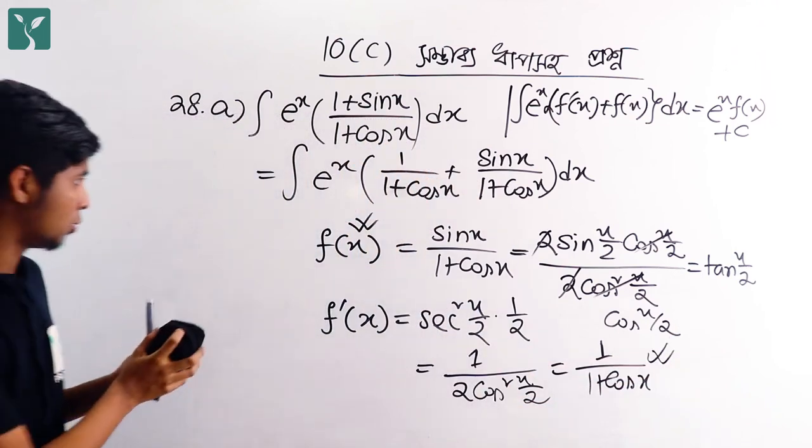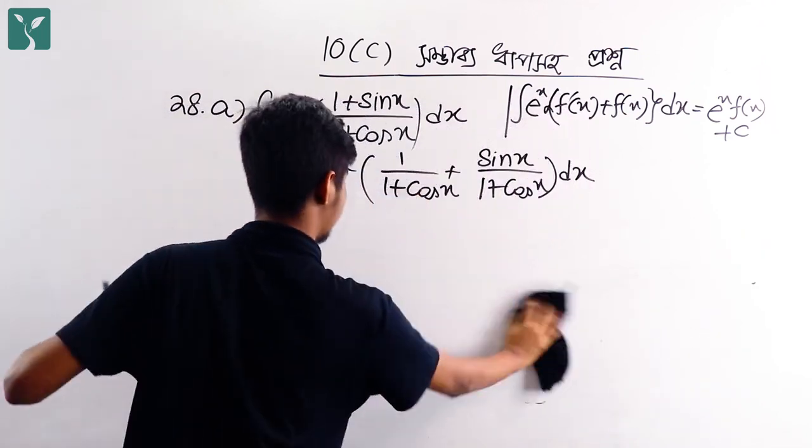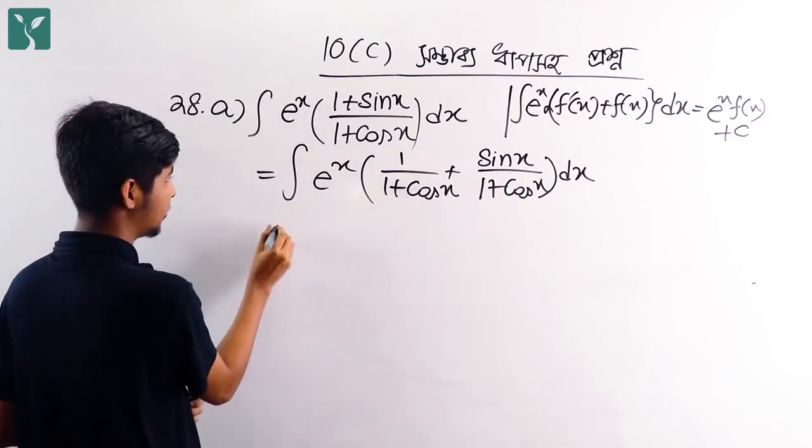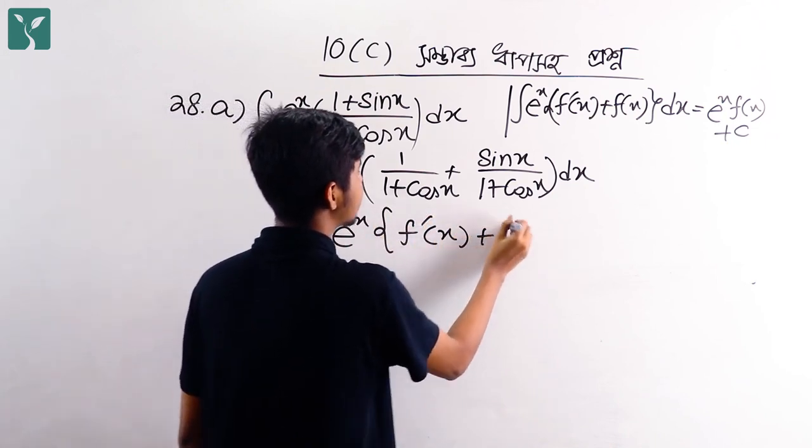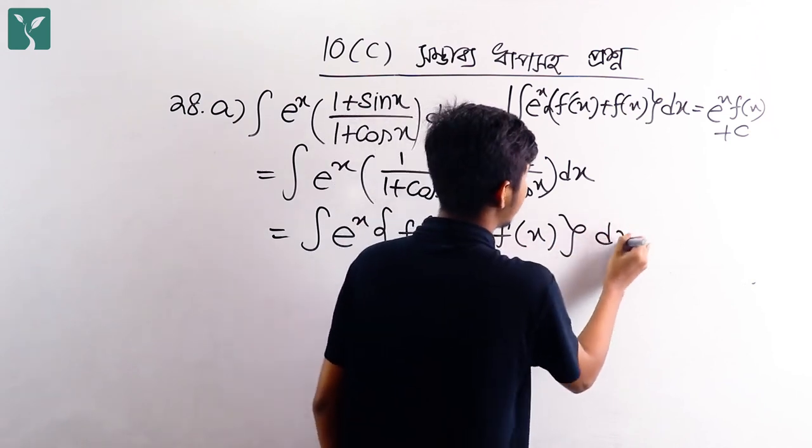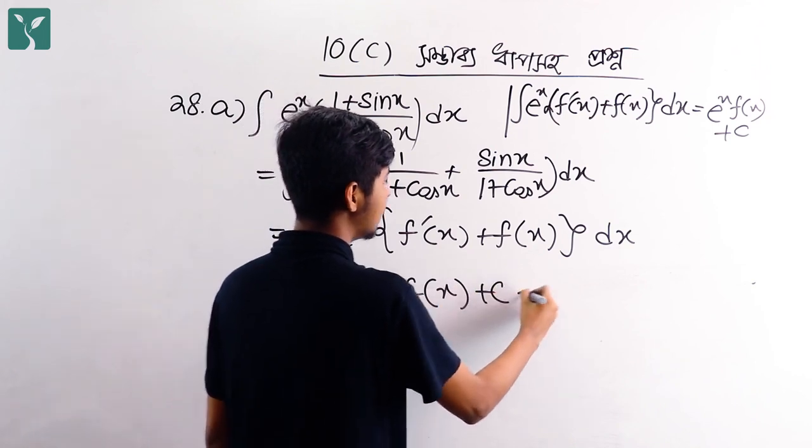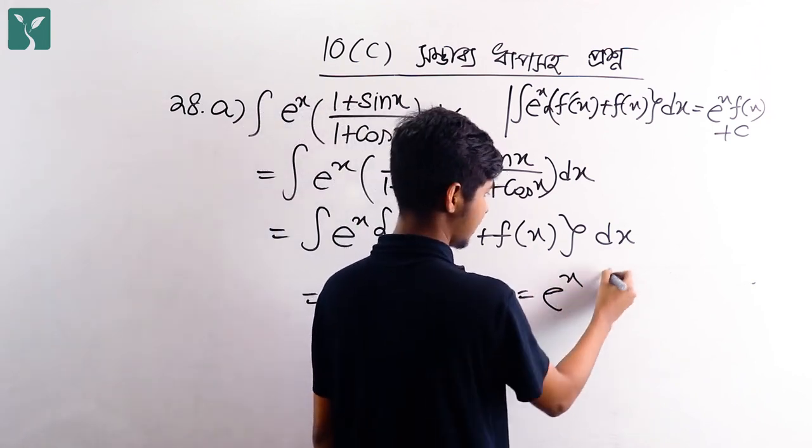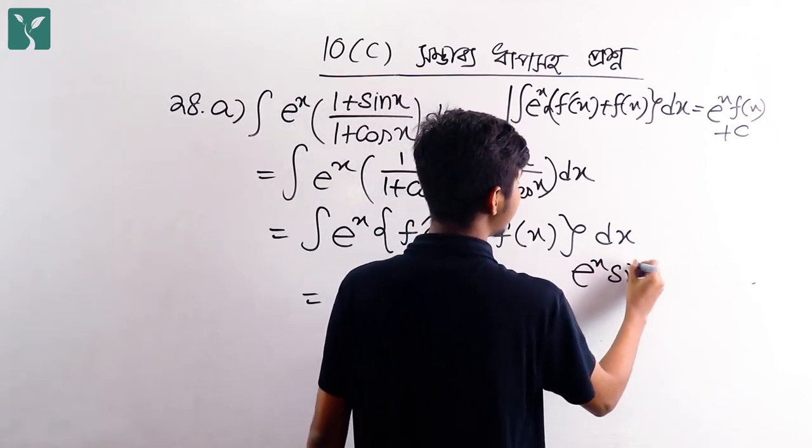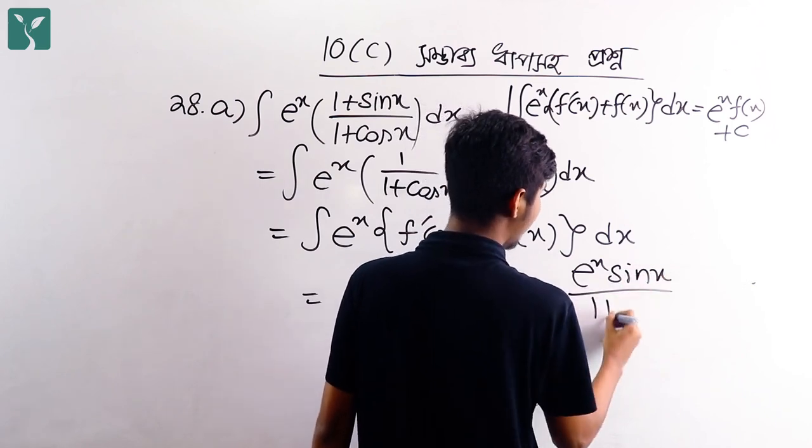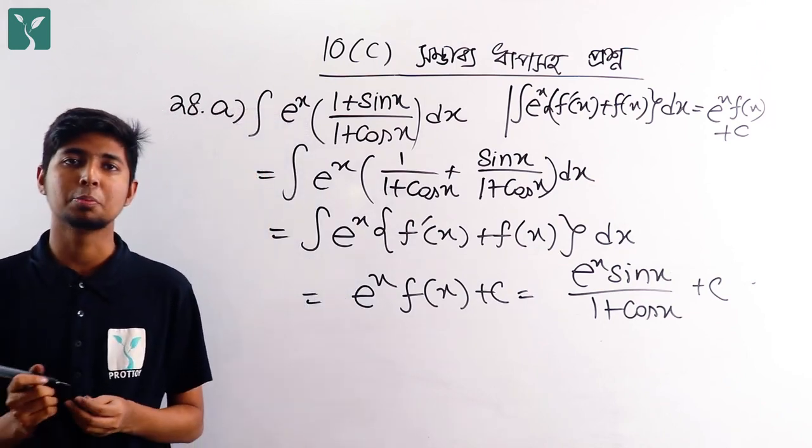So this portion is complete. We just take f of x as this and f prime of x as this. Therefore, e to the power x times sin x divided by one plus cos x plus c, and this is our solution to the problem.